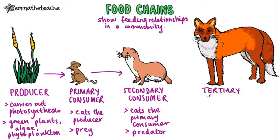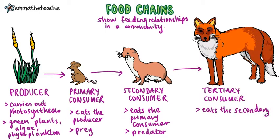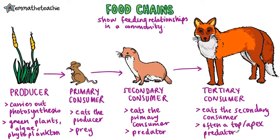Tertiary consumers eat secondary consumers. These are often top predators or apex predators that aren't hunted and eaten by anything else — for example, polar bears or killer whales. There can be levels above this, but this doesn't happen too often, as energy gets lost as you go up through each different level. You'll learn more about this when you study pyramids of biomass.